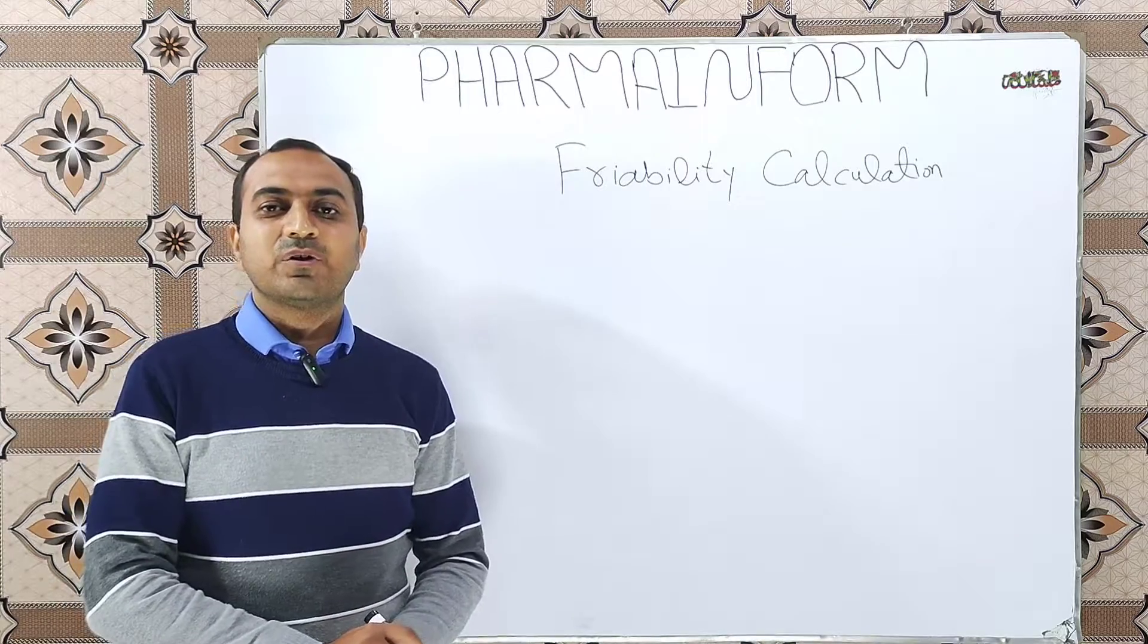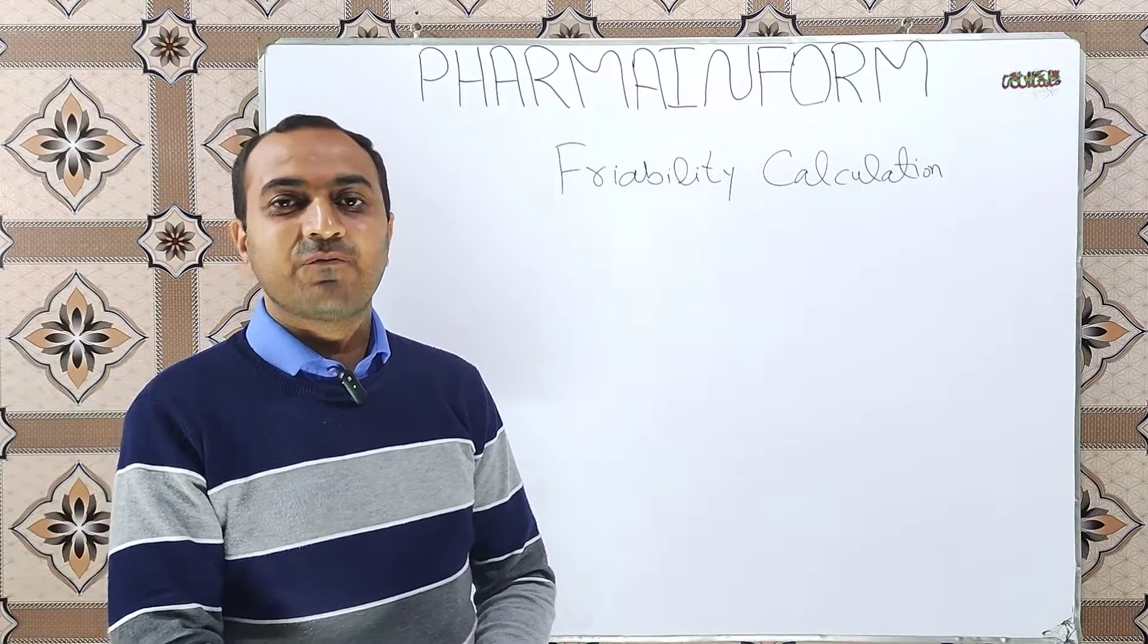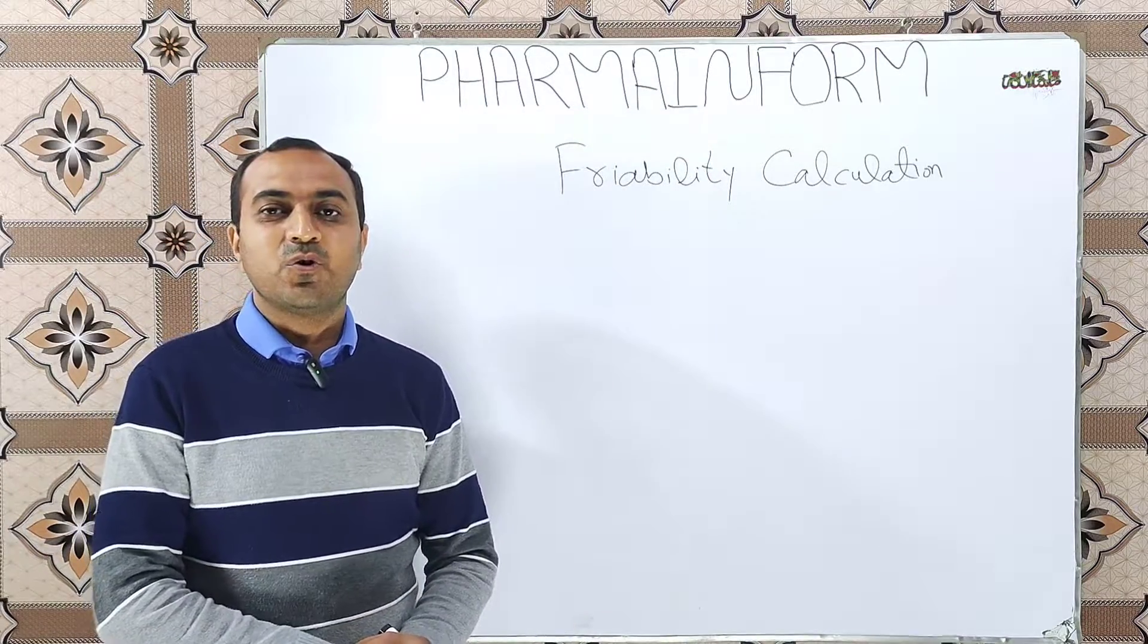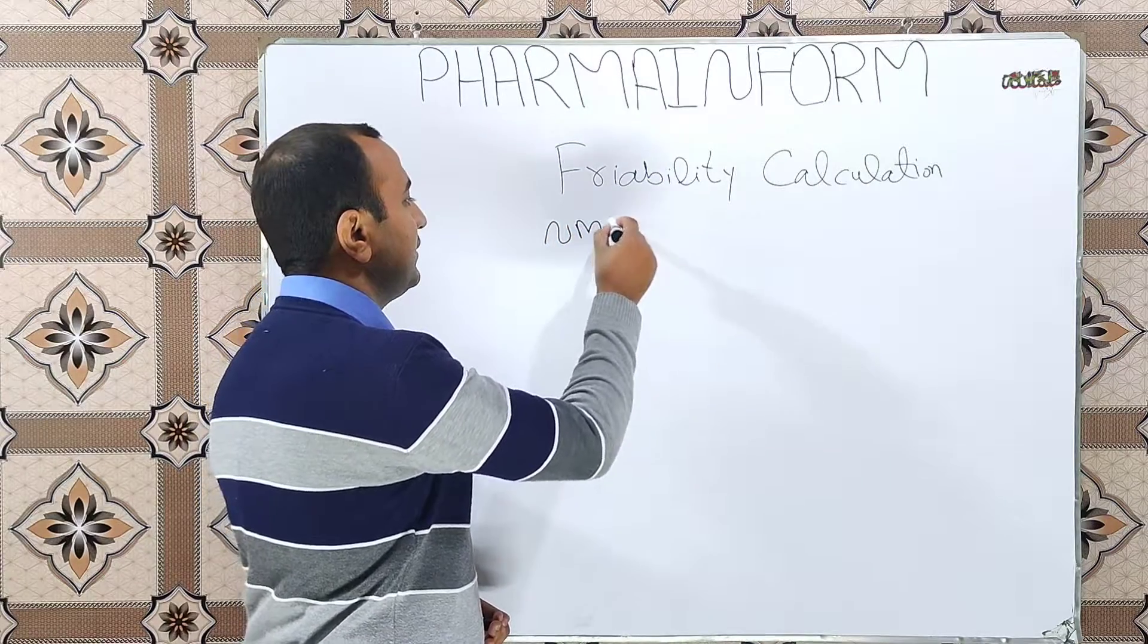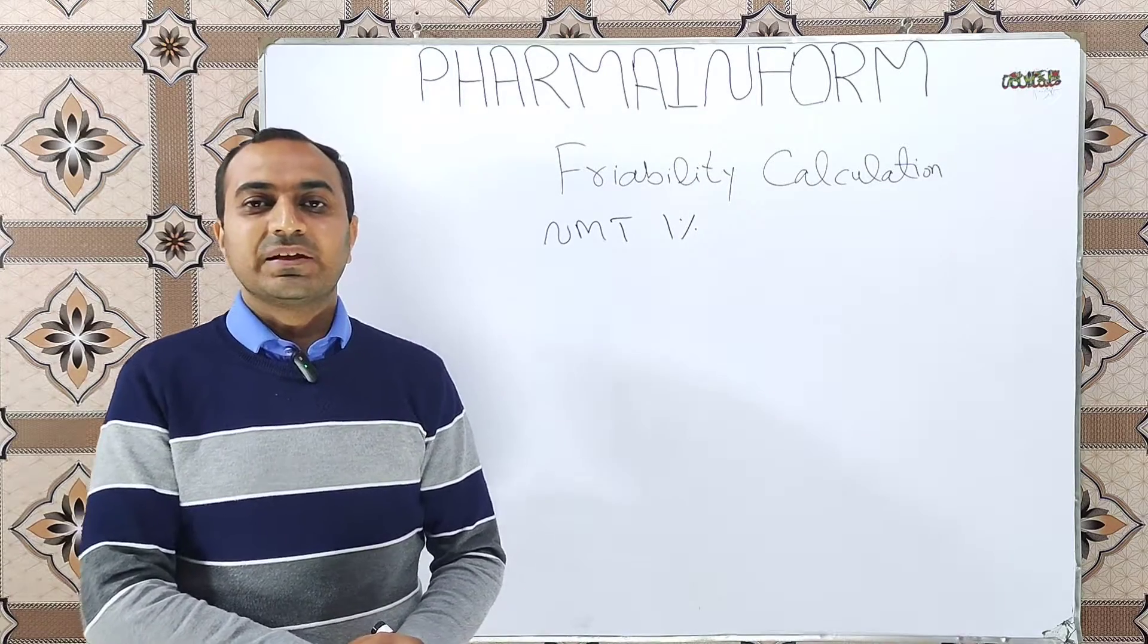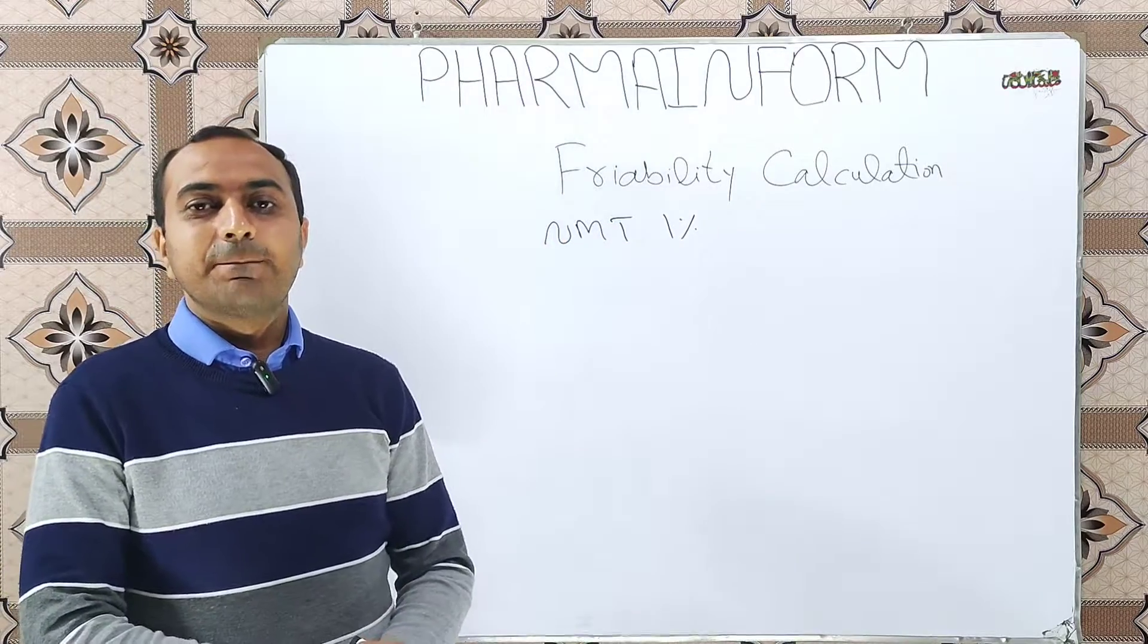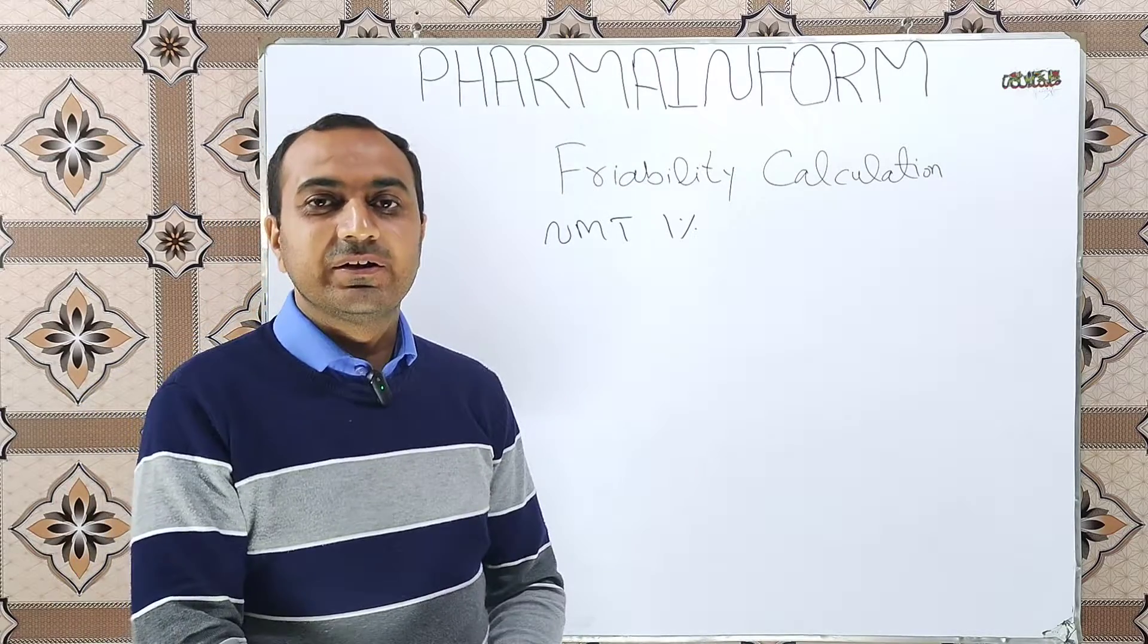So first, let's talk about its acceptance criteria. What is the acceptance criteria of friability? The friability acceptance criteria is not more than 1%. Not more than 1%. Meaning, if our friability values are less than 1%, then the test is considered passed. So let's start to learn how to calculate the friability.